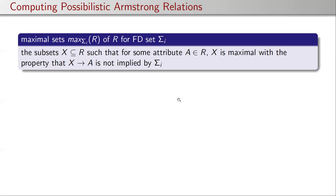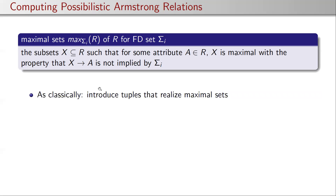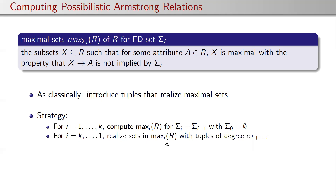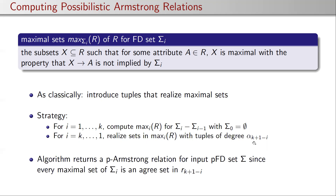To compute these relations automatically, the notion of a maximal set for a standard set of FDs is important. These are the subsets of the given relation schema that are maximal with the property that they do not functionally determine a given attribute A. Classically, we introduce tuple pairs that have matching values on exactly the maximal sets and different values elsewhere. Depending on the available possibility degrees from 1 to k, we compute these maximal sets for the different cuts and assign the possibility degrees backwards, returning a possibilistic Armstrong relation.